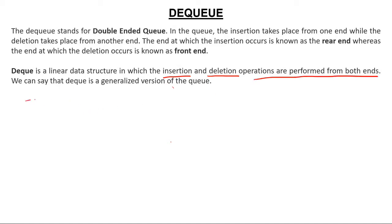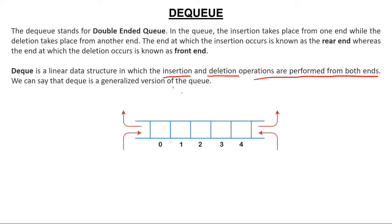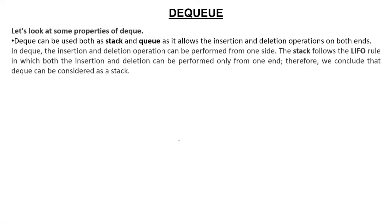We can say that DQ is a generalized version of a queue. If you see this diagram, it is a clear representation showing that you can insert from one side and delete also, and you can insert and delete from the other side also. Operations cannot be done from the middle.